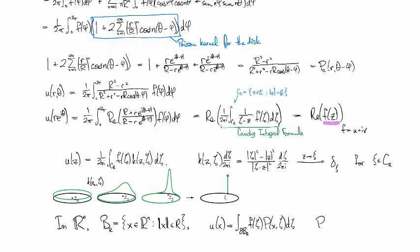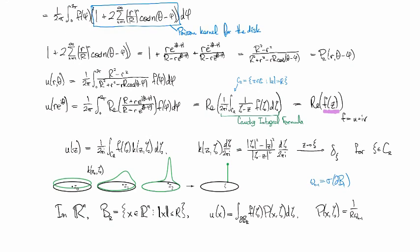Where now this kernel here is 1 over the radius, and then times ω_{n-1}—so that's going to be the surface area measure of the sphere of radius 1, for normalization—and then we've got (R² - |x|²) all over |x - ζ|^n. So it works out just the same in higher dimensions.